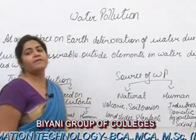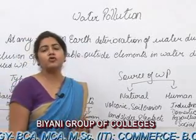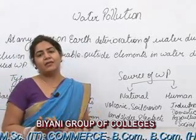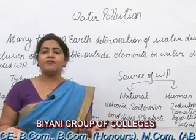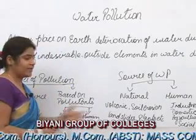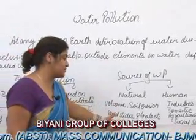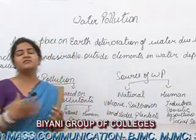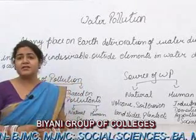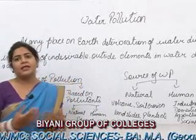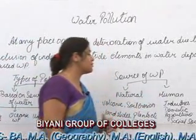Soil erosion is another natural source — when soil moves with water from a higher slope to a lower slope, it contains animal waste, plant waste, and natural waste, which pollutes the water. Landslides are also mentioned as a source. Additionally, plants contribute, as during certain seasons plants shed their leaves, and those leaves mix with water and cause pollution.